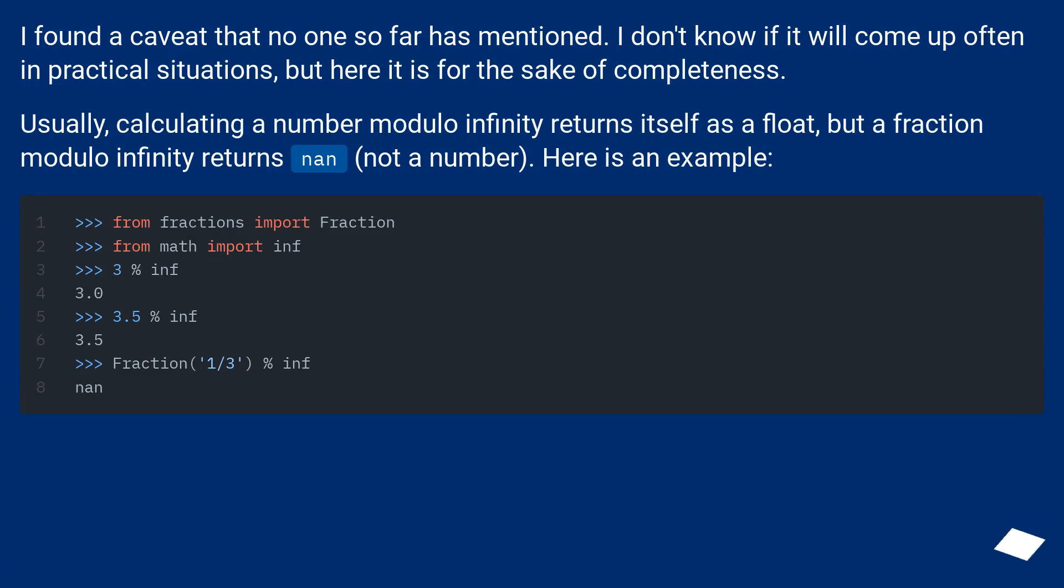I found a caveat that no one so far has mentioned. I don't know if it will come up often in practical situations, but here it is for the sake of completeness. Usually, calculating a number modulo infinity returns itself as a float, but a fraction modulo infinity returns NaN, not a number. Here is an example.